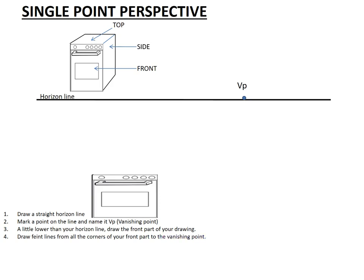It says now draw faint lines from all corners of the front part to the vanishing point. Let's check our points, our corners. This is the first corner, this is the second corner, the third one, and the fourth one. From all these corners, we must project very faint lines to the vanishing point. Let's start projecting the lines. This is from the top, another one from the top, and we've got this one. From the bottom left corner, and from the bottom right corner, we've got this one. We are done with number four.